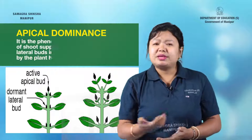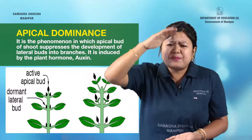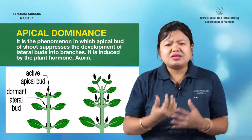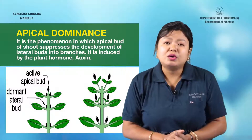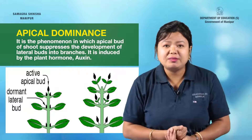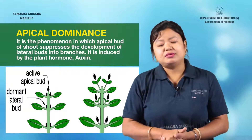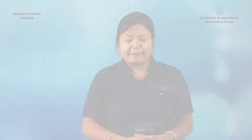Apical dominance is a phenomenon in which the apical bud suppresses the development of lateral buds into branches. This phenomenon is induced by the plant hormone called auxin. Today, we have learned how plants respond to various stimuli and the role of various phytohormones on plant growth. That's all for today. Let's meet in the next class.